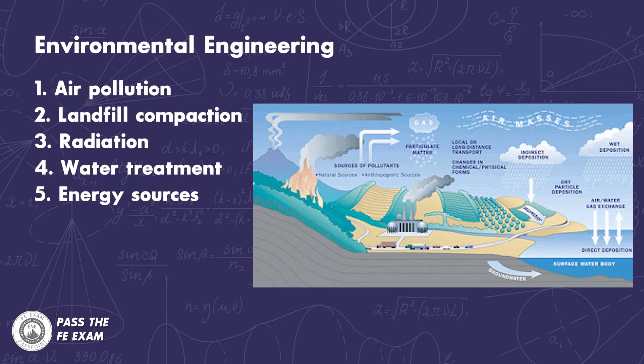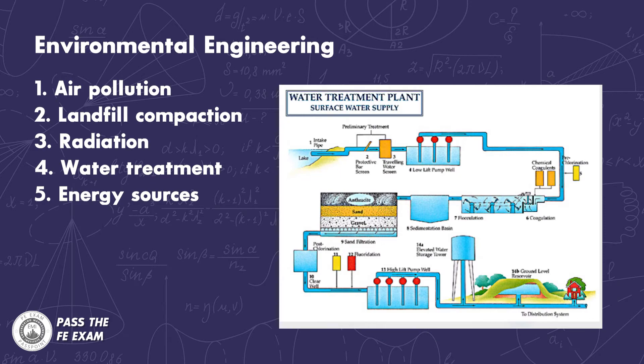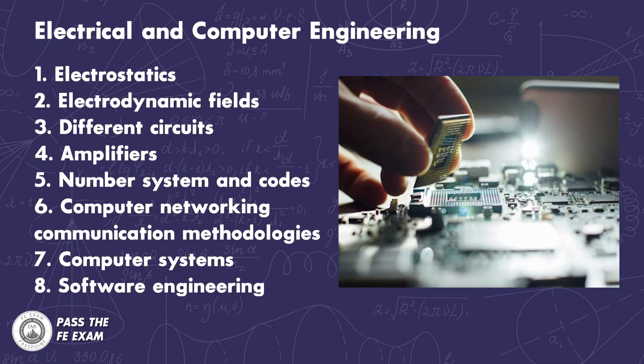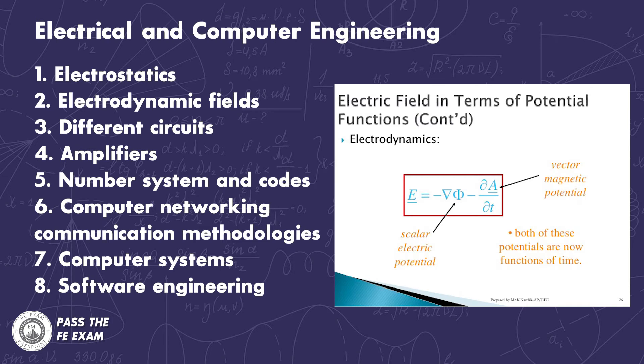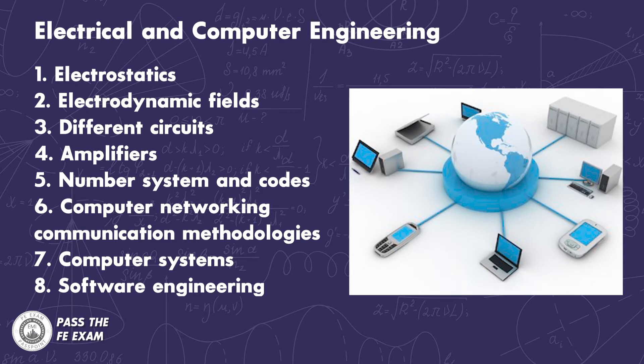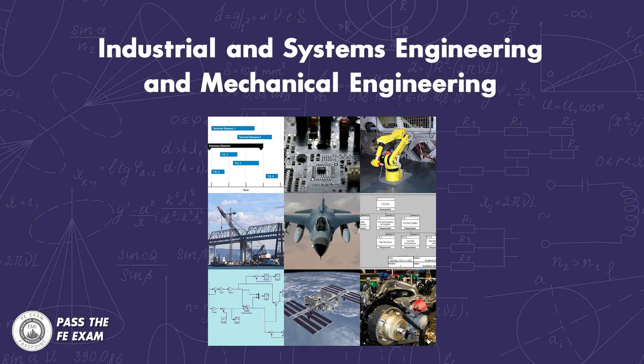Number seventeen, the environmental engineering section covers items related to air pollution, landfill compaction, radiation, water treatment technologies, and energy sources. Number eighteen, electrical and computer engineering, which covers electrostatics, electrodynamic fields, different circuits, amplifiers, and number systems and codes. It also covers computer networking, communication methodologies, computer systems, and software engineering. Lastly, number nineteen, there is a section covering industrial and systems engineering, as well as mechanical engineering.